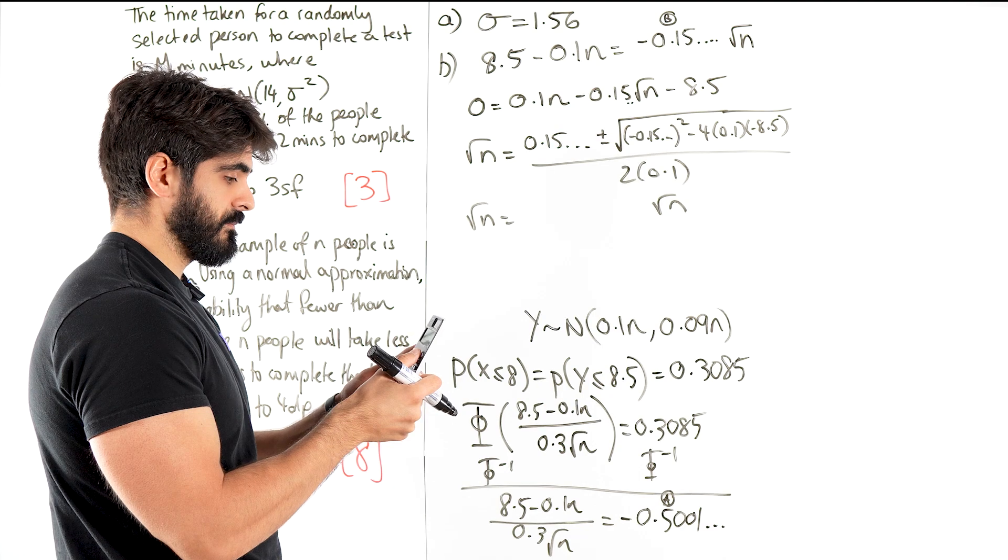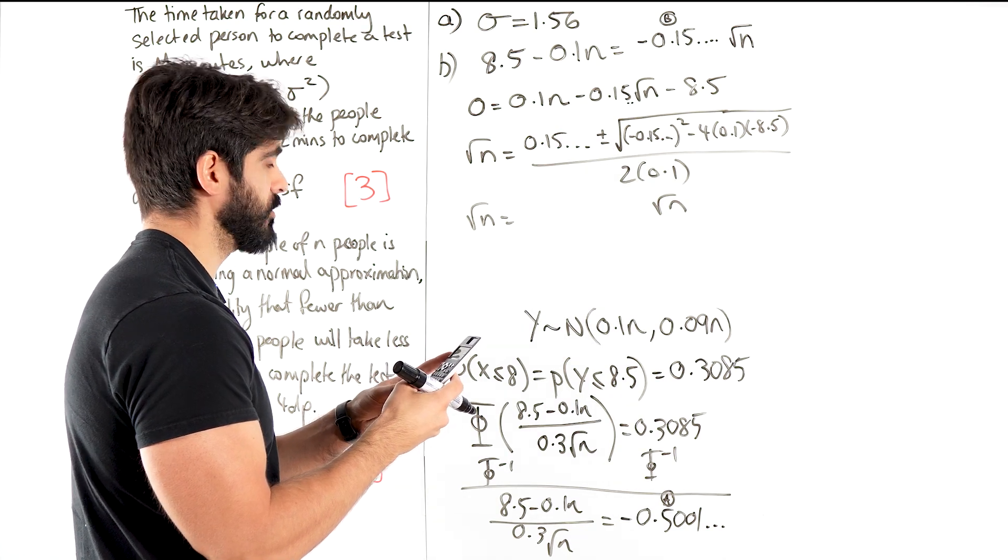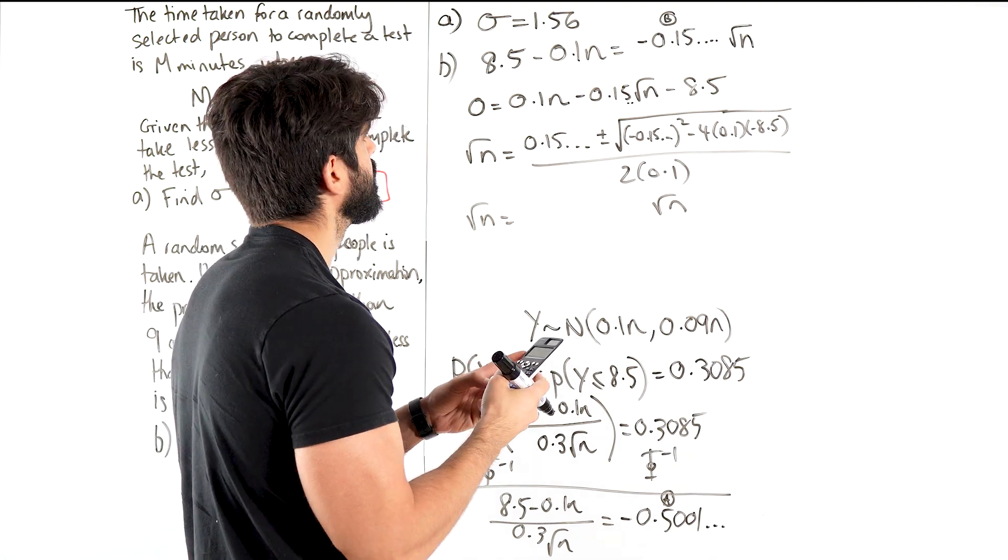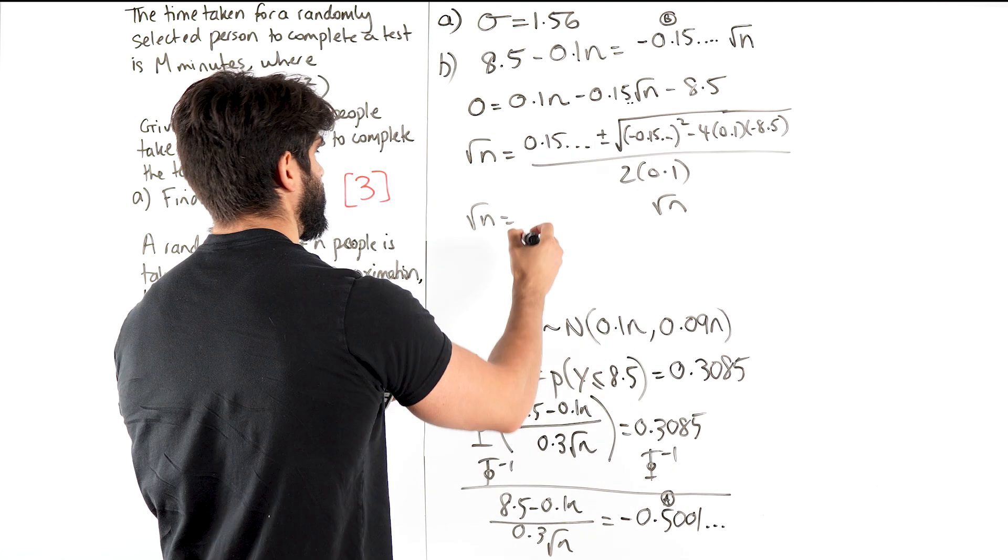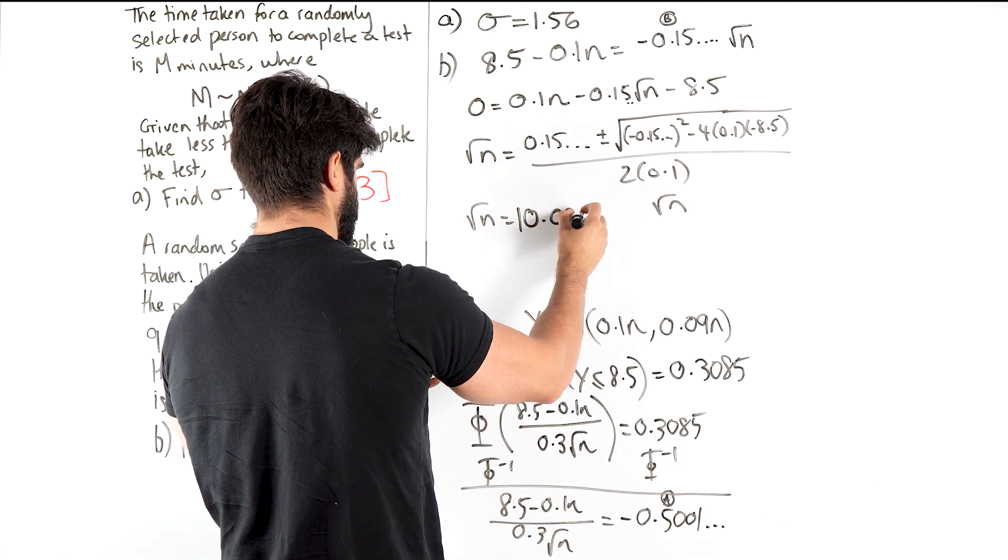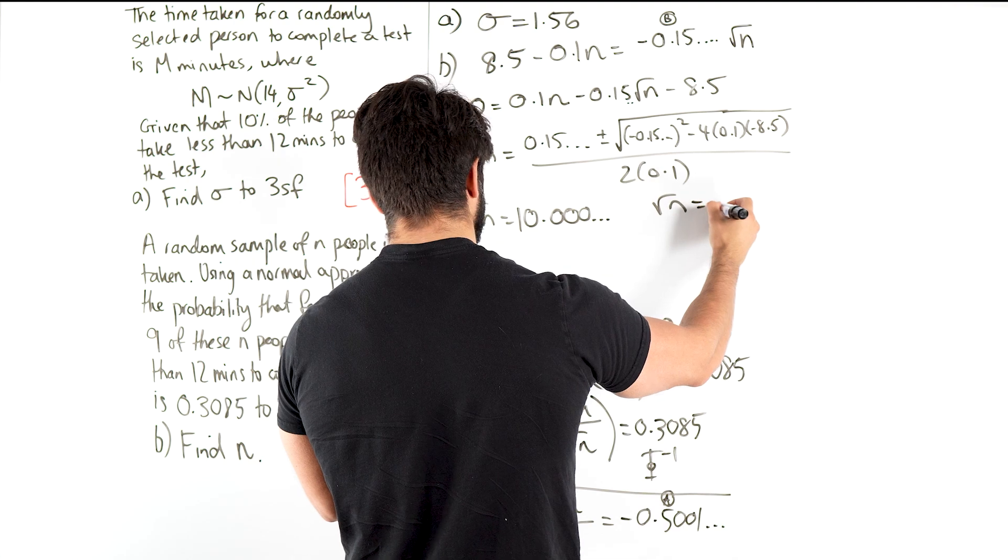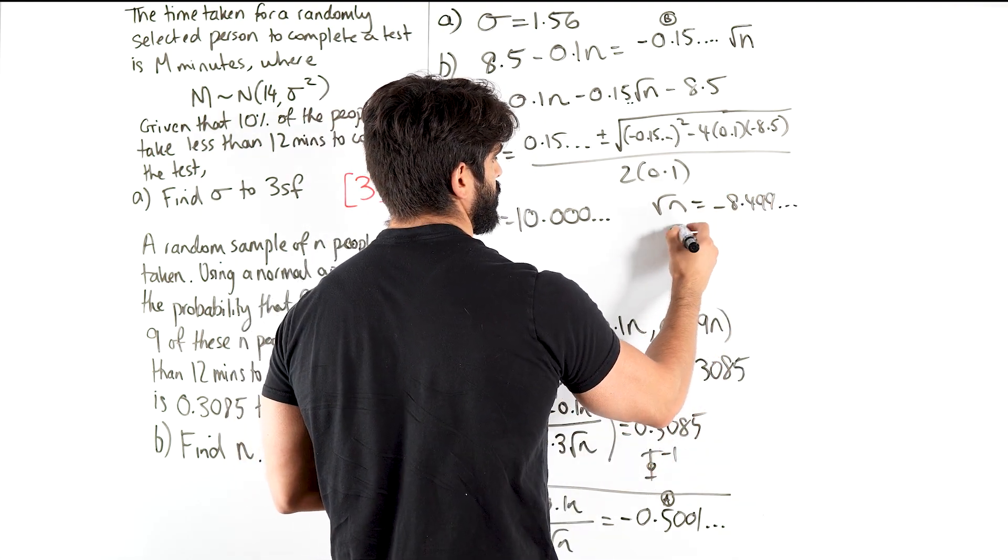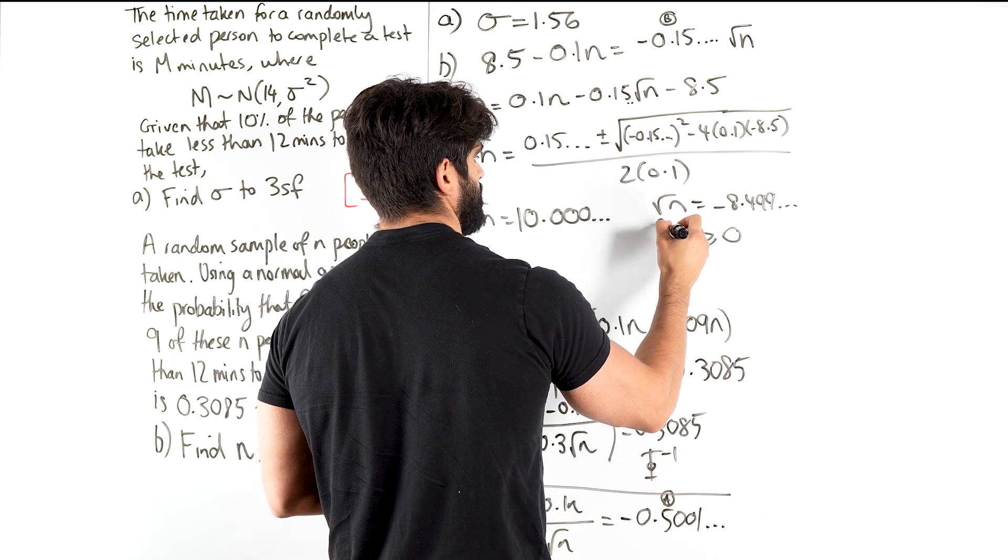So I have menu A, polynomial solver, 2, 0.1, what I stored as B, and minus 8.5. So one of my values is literally 10.000 dot dot dot dot, and the other one is minus 8.499 dot dot dot dot. But root n cannot be negative, root n is bigger than or equal to 0. I can say but.